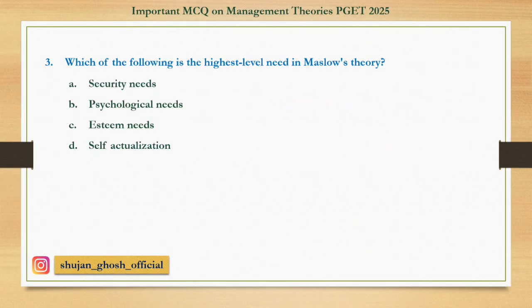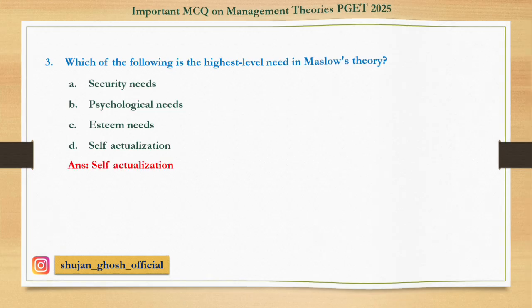Question number 3: Which of the following is the highest level in Maslow's theory? Option A: Security needs. B: Psychological needs. C: Esteem needs. D: Self-actualization needs. Answer is Self-actualization needs.